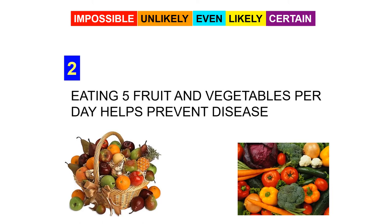Second example: eating five fruit and vegetables per day helps to prevent disease. Is it impossible, unlikely, even, likely or certain? This would actually be likely. It is very likely that having a good diet helps to prevent diseases, but it's not certain - people get diseases all the time who eat very healthily - but it's very likely to help.